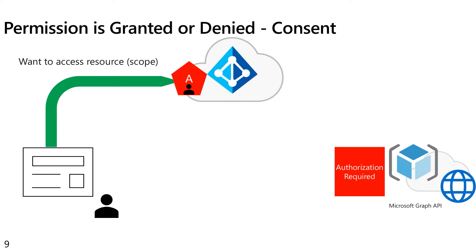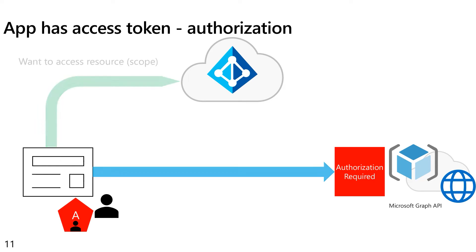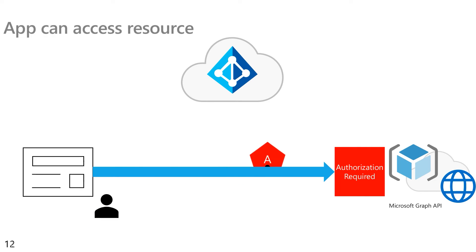Once consent is granted — if consent is denied, we will not return the token to the application and the application will need to handle that situation gracefully. But as long as consent has been granted, we will create an access token that includes claims identifying the user to the API. We'll return that access token to the application that asked for it, and then the application will make its call to the API and provide that access token. Now the API knows exactly what the application has been granted with respect to the permission requested in the scope parameter of that token, and it knows who the user is, and that the token has come from Azure AD and has not been tampered with, because the API will validate the token and the signing signature.